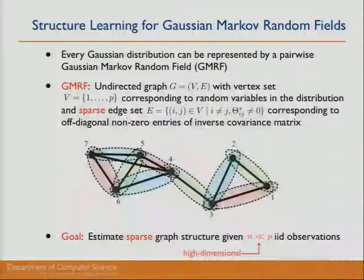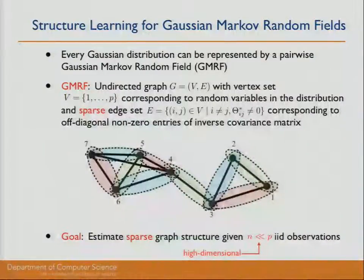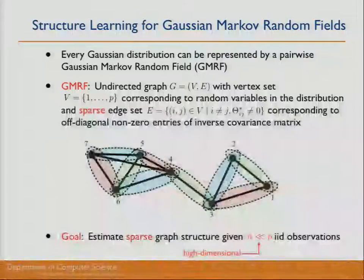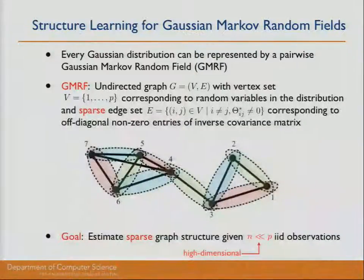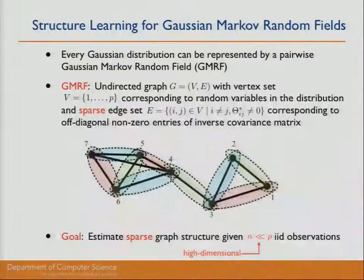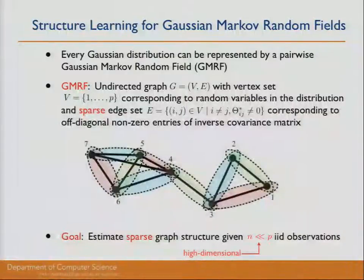This problem can also be looked at as a structural learning problem for Gaussian Markov random fields. Every Gaussian distribution can be represented by a pairwise undirected graphical model, with a graph G having a vertex set corresponding to the random variables and a sparse edge set. The edges correspond to the off-diagonal non-zero entries in the inverse covariance matrix. Equivalently, we can estimate the sparse graph structure given a high dimensional set of observations, where N is often orders of magnitude smaller than P.